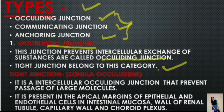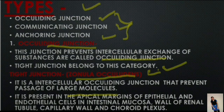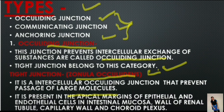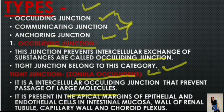Tight junction is also known as zonula occludens. It is an intercellular occluding junction that prevents the passage of large molecules — it does not allow any large molecule inside the cell. It is the region where the cell membrane of two adjacent cells fuse together. This type of junction is present in the apical margin of epithelial and endothelial cells — in intestinal mucosa, wall of renal tubules, capillary walls, and choroid plexus.